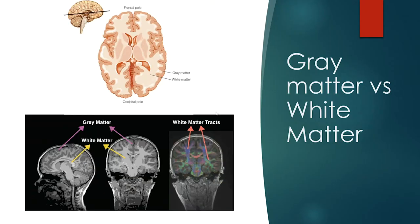Gray matter is where all the cell bodies are; white matter is all of the connections between them. That colorful diffusion imaging picture maps out all of those wires — all the different connections between parts of the brain. We'll talk about that when we get into methods.